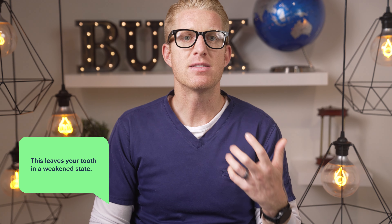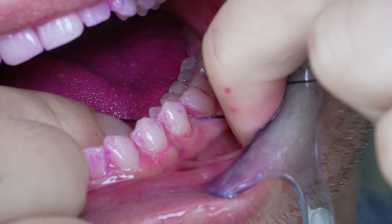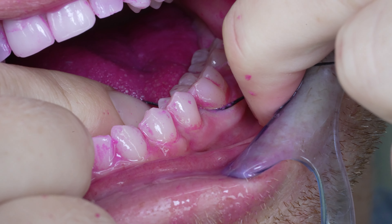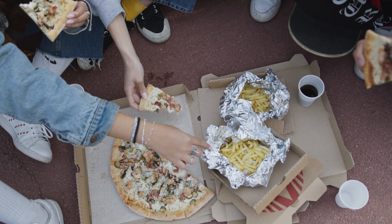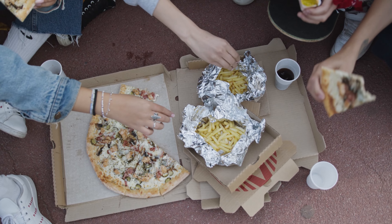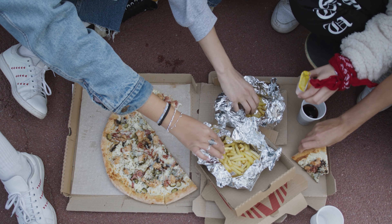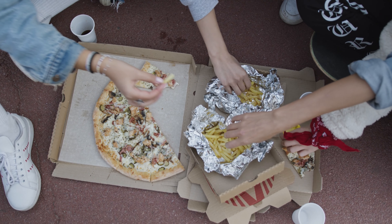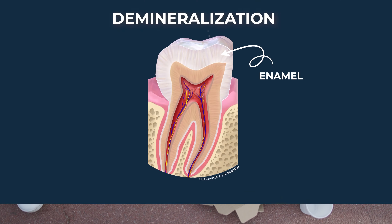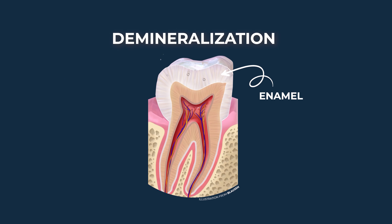This leaves your tooth in a weakened state. This pH of 5.5 is called the critical pH. So to recap: bacteria in your mouth — especially on the plaque adhering to your teeth — takes the sugar and carbs you eat and creates an acidic environment right around the tooth, which then demineralizes it. It loses minerals and is left in a weakened state.